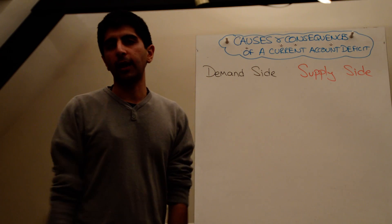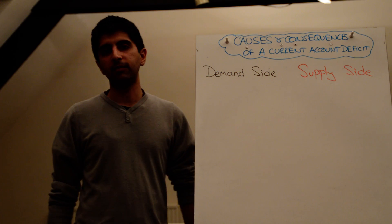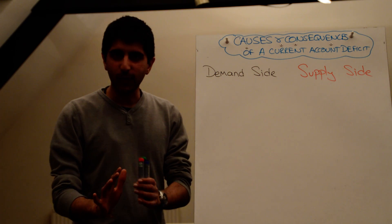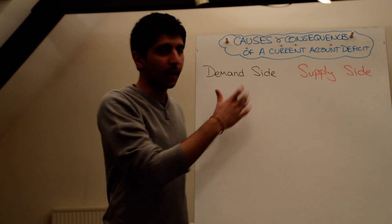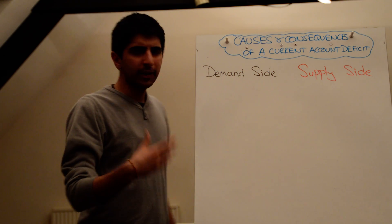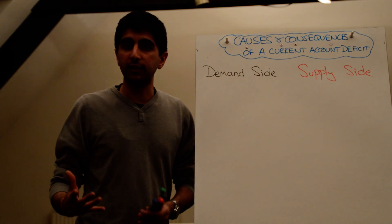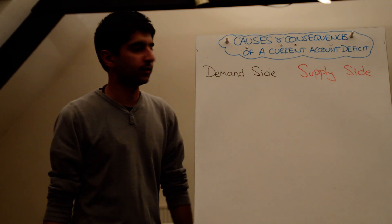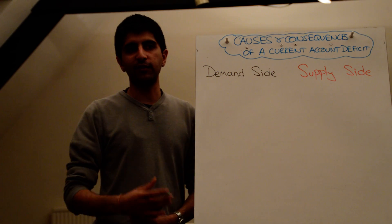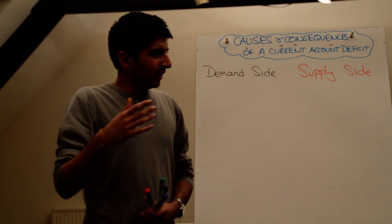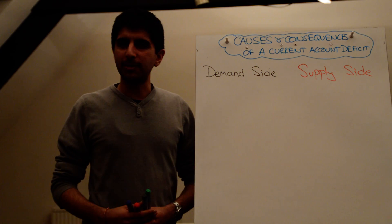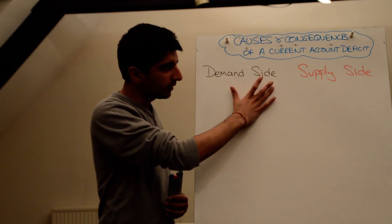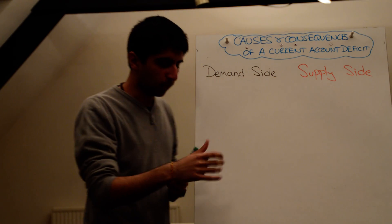Right. Our country's got a current account deficit. Should we care? Well, to answer that question, we need to understand how has it been caused, and then we need to understand what are the consequences of it actually occurring. We need to look at the UK. The UK's had a current account deficit for like 30 years. The US has had a current account deficit for donkey's years as well. It doesn't really look like the government cares that much about it. Why? Well, let's understand. Why might a current account deficit be caused?